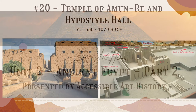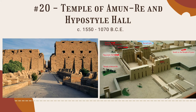The first image of today's video is the Temple of Amun-Re and its hypostyle hall. Located in Karnak, Thebes — now known as Luxor — this temple was the religious center for ancient Egypt. It was dedicated to the worship of Egypt's principal god, Amun-Re, the god of the sun and the air, a combination of the god Amun and Ra.